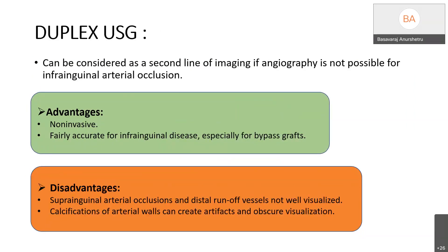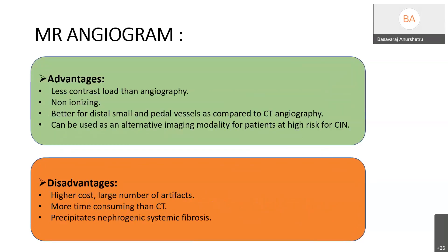Duplex ultrasound can be considered as a second-line imaging option if angiography is not possible in infra-inguinal arterial occlusion. It is non-invasive and fairly accurate for infra-inguinal disease, especially bypass graft occlusions. However, supra-inguinal occlusions and distal runoff vessels cannot be well visualized, and arterial wall calcifications can create artefacts. MR angiogram advantages include less contrast load, non-ionizing radiation, better visualization of distal small vessels, and it can be used in patients at high risk for contrast-induced nephropathy. Disadvantages include higher cost, more artefacts, longer acquisition time, and risk of nephrogenic systemic fibrosis.